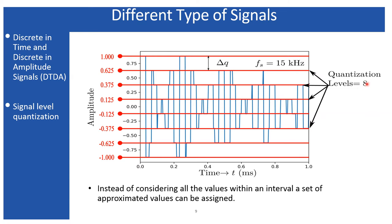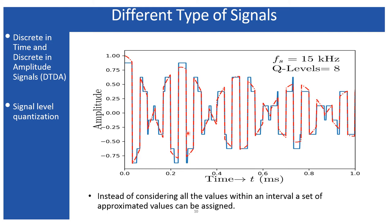In this way I have discretized the entire amplitude range into several levels. Each level is called a quantization level, and the process is known as quantization. The difference between each level is known as the quantization step. Here, the time axis is discretized by sampling at 15 kHz, and the amplitude axis is quantized with 8 discrete levels. In this diagram, I have superimposed the DTCA signal over the DTDA signal, with the red dotted ones representing the DTDA signal.